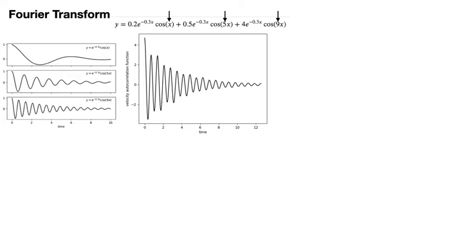Elsewhere in your maths degree, you have probably encountered the Fourier series. When you were taught this topic, the fact that you can represent all periodic functions as a suitable linear combination of sine functions and cosine functions was almost certainly explained. You probably also learned that you can represent periodic functions in the frequency domain rather than the time domain. When you represent the functions in this domain, you can provide information on the coefficients of all the cosine and sine functions that were used to construct the original periodic function. The periodic part of the function at the top of the slide would thus have a peak at a frequency of 1, a peak at a frequency of 5, and a peak at a frequency of 9, with heights of 0.2, 0.5 and 4 respectively.